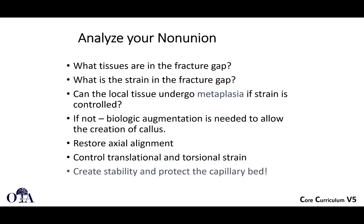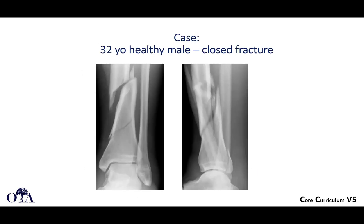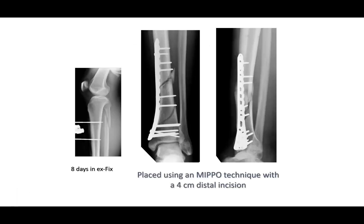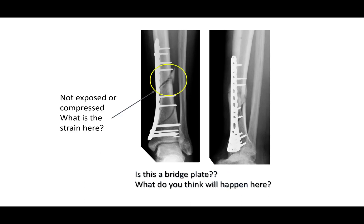Let's now get into some cases. Here's a 32-year-old healthy male with a closed fracture of the distal tibia shaft extending to the metadiaphyseal region, as you can see on these AP and lateral images. The patient was initially treated in preliminary external fixation, and then treated using minimally invasive percutaneous plate osteosynthesis with a 4-centimeter distal incision. So think about what is the strain here — is this a bridge plate? What do you think is going to happen here?